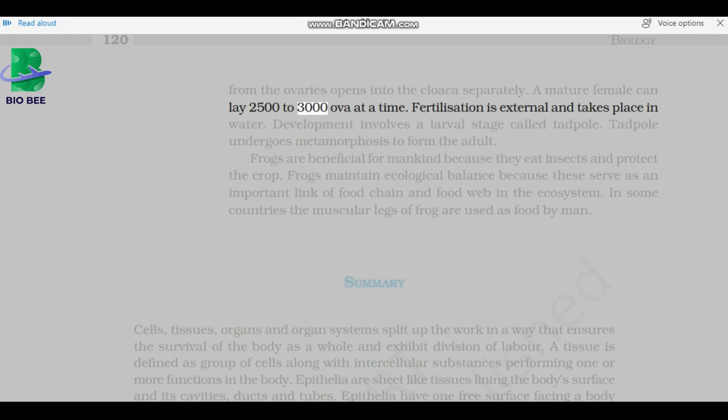Fertilization is external and takes place in water. Development involves a larval stage called tadpole. Tadpole undergoes metamorphosis to form the adult. Frogs are beneficial for mankind because they eat insects and protect the crop. Frogs maintain ecological balance because these serve as an important link of food chain and food web in the ecosystem. In some countries, the muscular legs of frog are used as food by man.